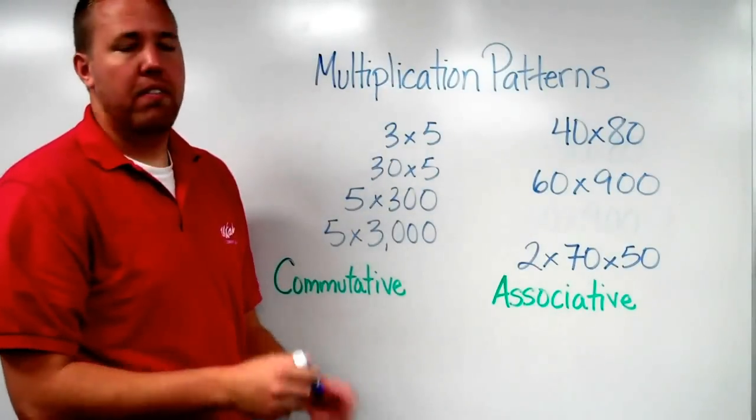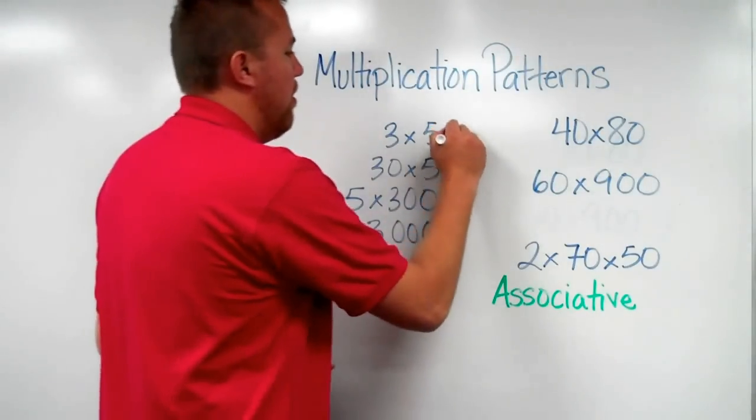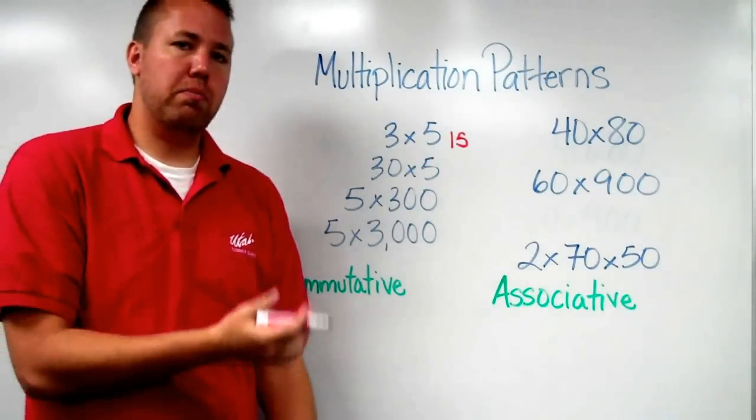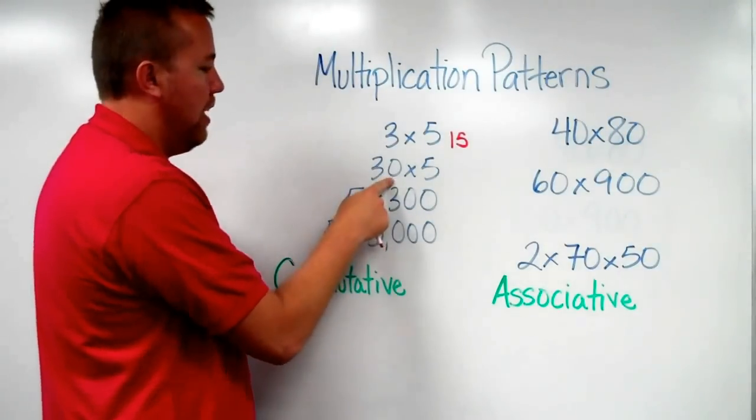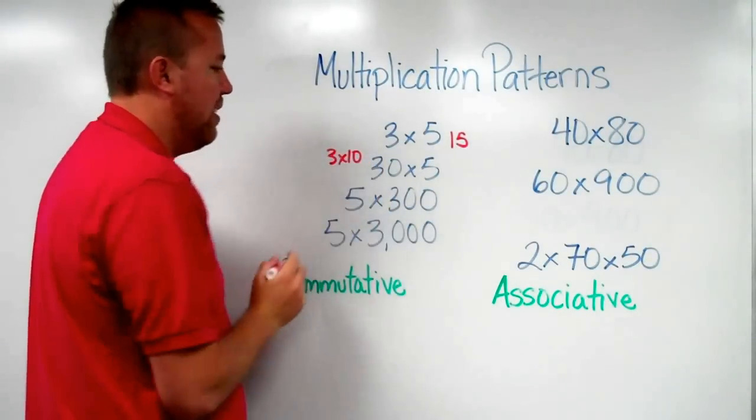So as we have 3 times 5 equals 15. That's a simple, basic fact. Now as we get to 30 times 5, our knowledge of place value means that this is really just 3 times 10.